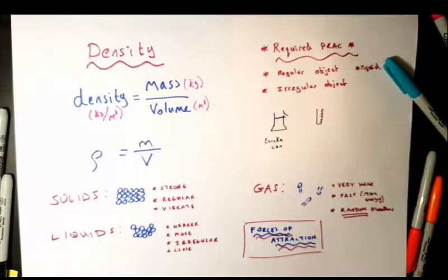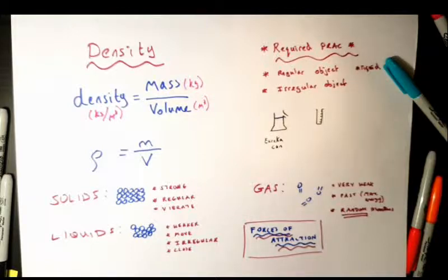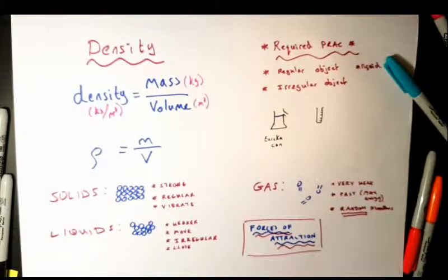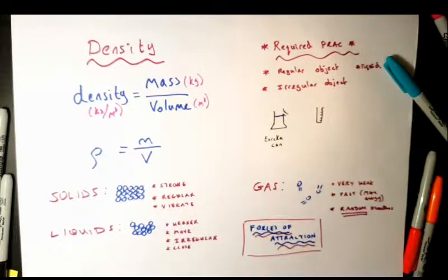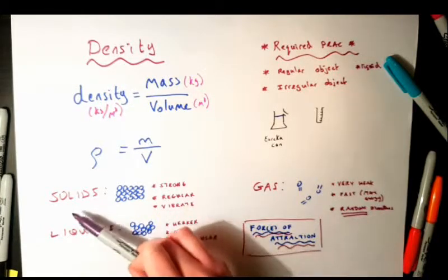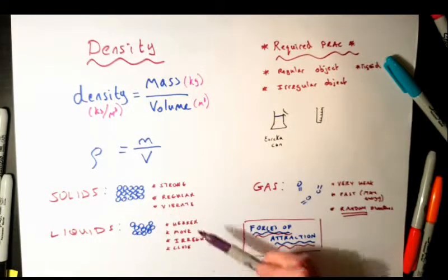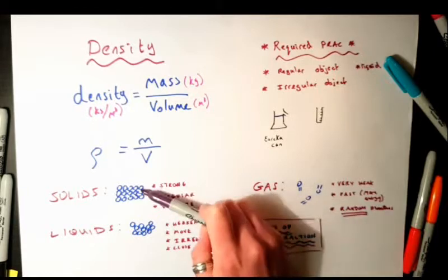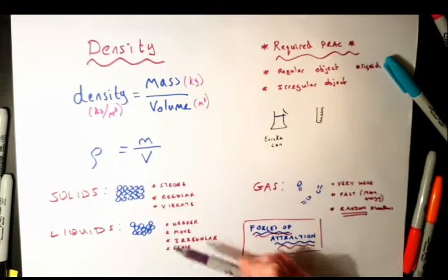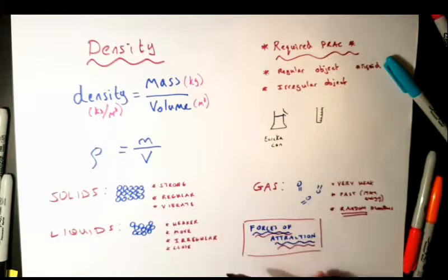Before we go into the required practical for density, let's remind ourselves of states of matter — our solids, liquids and gases — taking this to GCSE level. When we talk about these different states, we need to talk about the forces of attraction between particles. For a solid, they have strong forces of attraction, which is why they're held in a regular shape and can only vibrate. The forces stop the particles from moving away from each other.